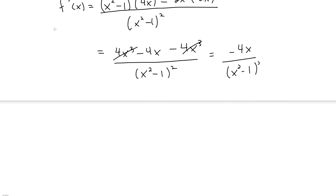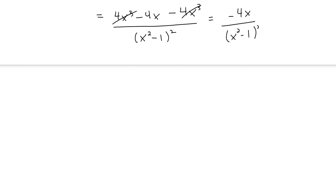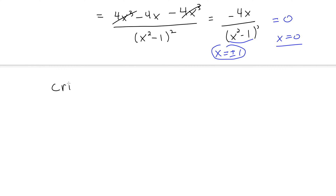Next we want to identify our critical points by finding where the derivative is either equal to 0 or undefined. When this derivative equals 0, we simply get x equals 0, so there's a critical point. The derivative is undefined at x equals plus or minus 1, but technically these are not critical points because they're not in the domain — they're the asymptotes. However, we still use them to test the regions because the function could change from increasing to decreasing across the asymptotes.